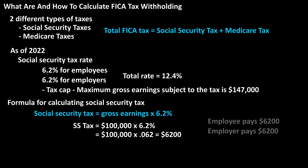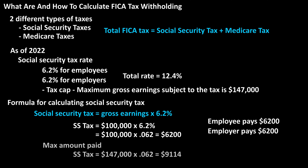So the employee would pay $6,200, and the employer would also pay $6,200. The maximum that an employee can pay would be the tax cap of $147,000 times 6.2%, or 0.062, which equals $9,114.